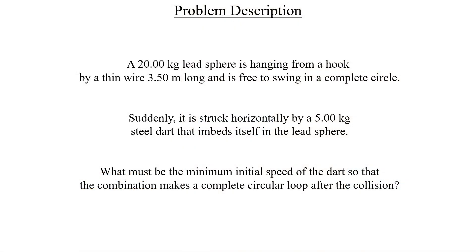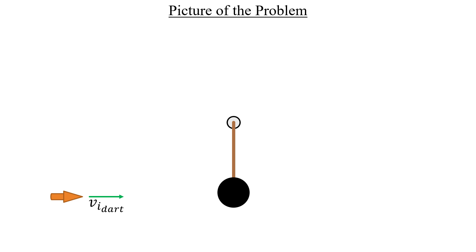Here's another inelastic collision problem for us that's a little different than the others we've done so far. Basically, we're going to throw a dart at a hanging lead sphere. That dart will get stuck inside the sphere and the impact will cause both objects to swing in the path of a circle. We want them to do a complete loop and the whole idea of the problem is to find the smallest velocity that the dart could have in order to make this circular motion occur.